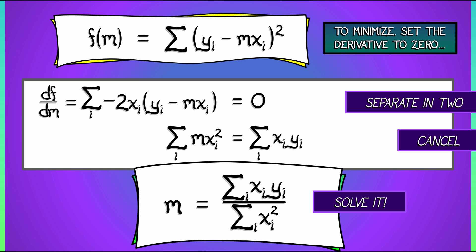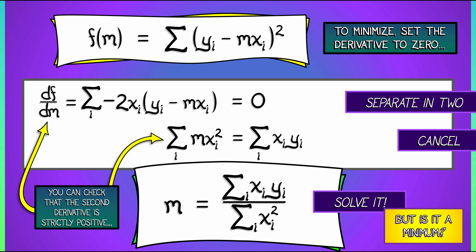But wait a minute, we didn't actually check that this was a minimal value of m. We just found that it was a critical point. What do we do? Well, we could argue from qualitative grounds that m can't be a maximum, but let's do it the right way. Let's use a second derivative test. Or rather, you can use a second derivative test.